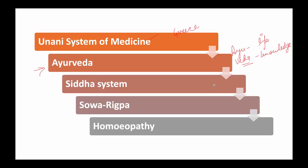Next is the Siddha system. The Siddha system of medicine is practiced in parts of South India, especially in the state of Tamil Nadu. The term Siddha comes from 'Siddhi,' which means achievement. Siddhars were men who achieved supreme knowledge in the field of medicine, yoga, or tapa — tapa meaning meditation.